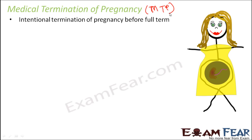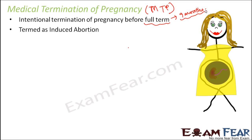MTP is the intentional termination of pregnancy before full term. Full term means the entire gestation period of 9 months. Once a female gets pregnant, by the time the zygote develops into a baby ready to be delivered, it takes 9 months. If the female by her choice voluntarily gets the pregnancy terminated — that is, if she gets the child aborted — that is known as Medical Termination of Pregnancy. It is also known as induced abortion, and it happens voluntarily at the will of the couple or the female.